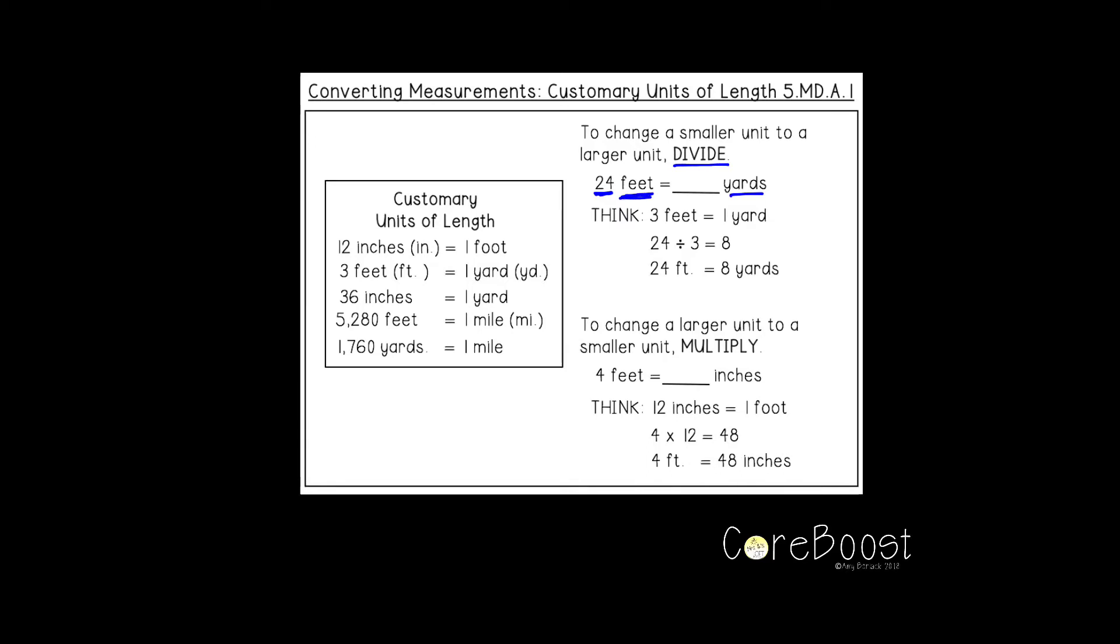A foot is smaller than a yard, right? So I have to divide my 24 feet to find how many yards. I know that there are three feet in one yard. So I take my 24 feet and divide it by three and I get eight. 24 feet equals eight yards.